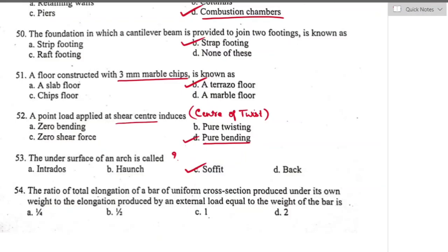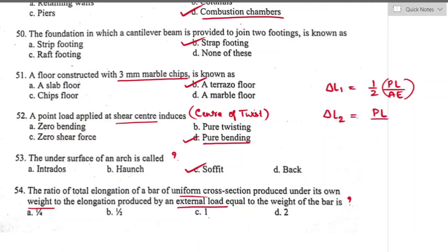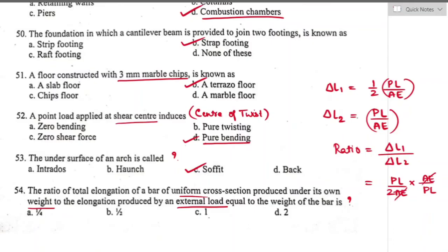Question number fifty-four: the ratio of total elongation of a bar of uniform cross section under its own weight to the elongation produced by an external load equal to the weight of the bar. Elongation under self-weight = PL/(2AE); elongation under external load = PL/AE. The ratio δL₁/δL₂ = [PL/(2AE)] / [PL/AE] = 1/2. Option B is the right answer.